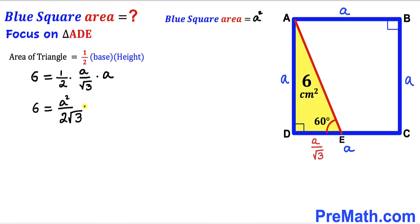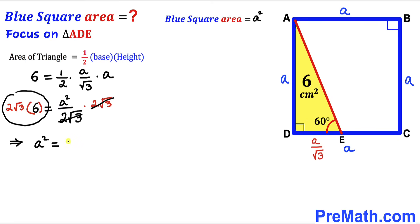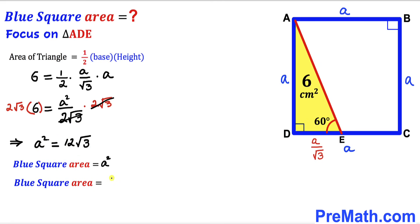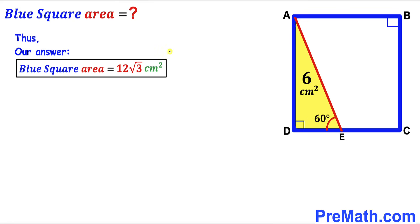Now we isolate a² by multiplying both sides by 2√3. The 2√3 terms on the right cancel, giving us a² = 6 × 2√3 = 12√3. Since the blue square area is represented by a², we conclude that the blue square area is 12√3 cm².